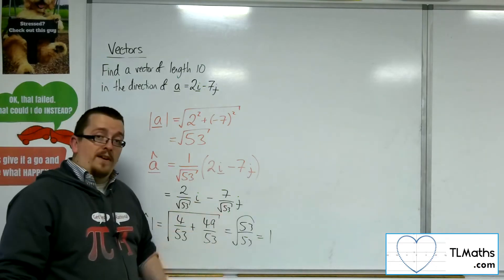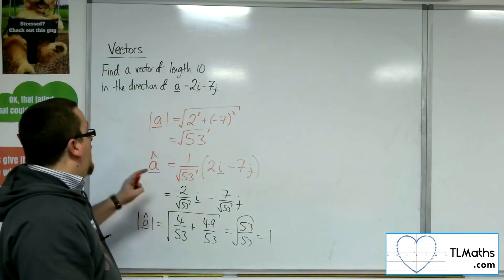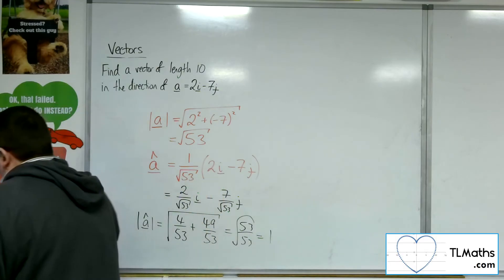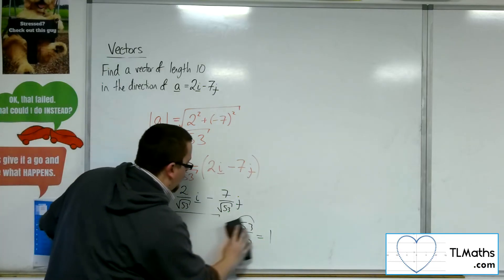So this definitely has unitary length, and it is definitely parallel to A, so it is a vector that has length 1 going in the direction of A. Brilliant.